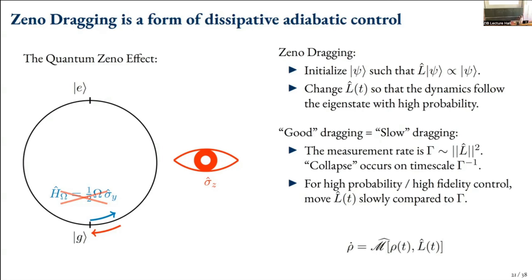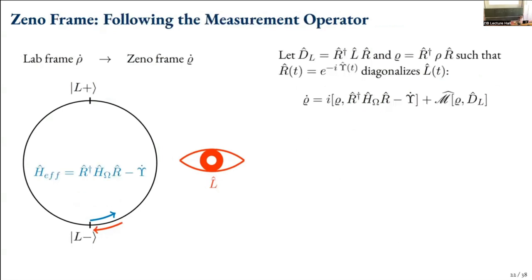The idea here is to do this in a fast way rather than infinitely slowly. We move into the Zeno frame, which is a frame in which the measurement operator is diagonalized. We have diagonal operator D that diagonalizes operator L, transform our density matrix from rho to rho-tilde, and write the diagonalization operator R as e^{-i epsilon t}. This diagonalizes L, and our equation of motion for rho-tilde has the form of an effective Hamiltonian — the Zeno-frame-transformed drive minus an omega-tilde term — plus all the other measurement terms.